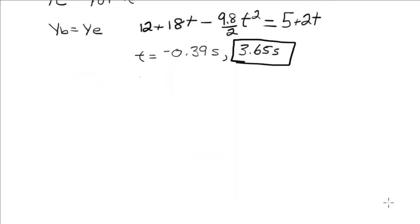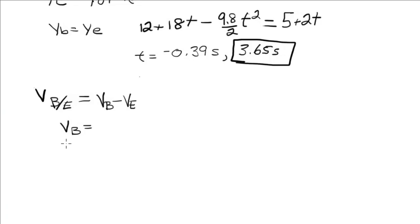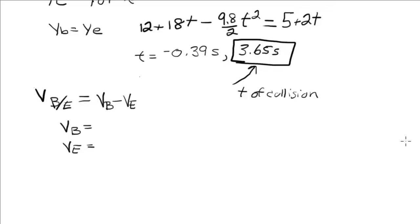The next part asks for the relative velocity of the ball with respect to the elevator. That's just the difference in their velocities. We need to write down the velocity of the ball and the velocity of the elevator, then evaluate both at t equals 3.65 seconds. We get the velocities by taking the derivative with respect to time of the position equations.